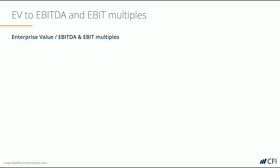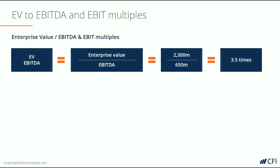Let's take a look at the EV to EBITDA and EV to EBIT multiples. Starting with EV to EBITDA, we take the enterprise value, which is 2.3 billion, and divide it by the EBITDA, which we found on the income statement, 650 million. If EBITDA is not explicitly given, you can simply take EBIT and add back depreciation and amortization, or take pre-tax earnings, add back interest, and add back depreciation and amortization. This gives us a multiple of 3.5 times.